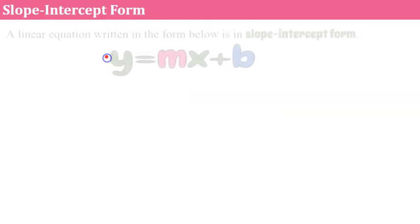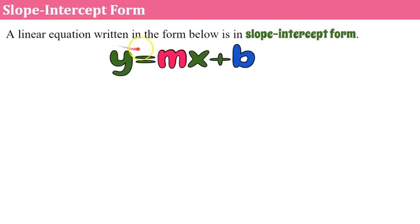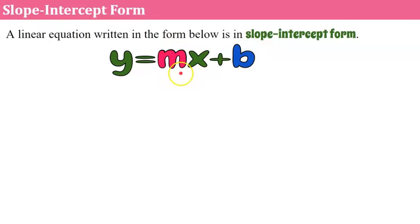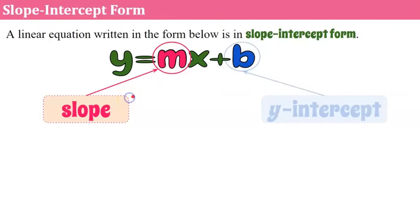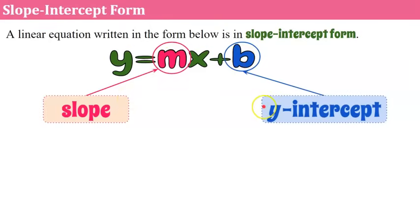Slope-intercept form. A linear equation written in the form y equals mx plus b is in slope-intercept form, where m is the variable that represents the slope of the line and b is the variable that represents the y-intercept of the line.